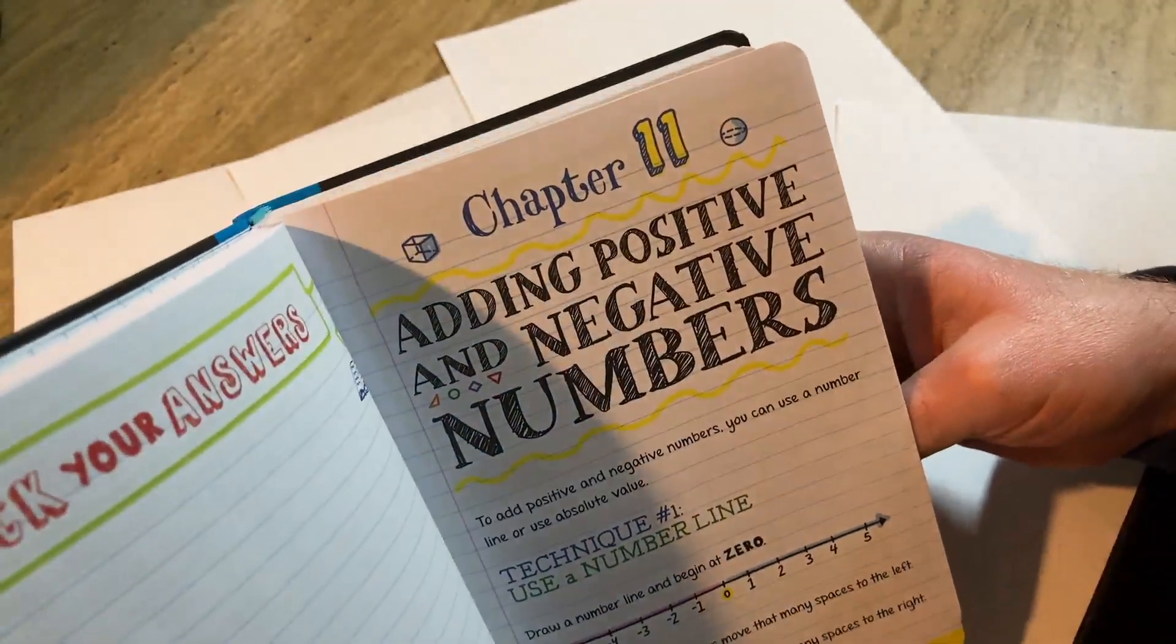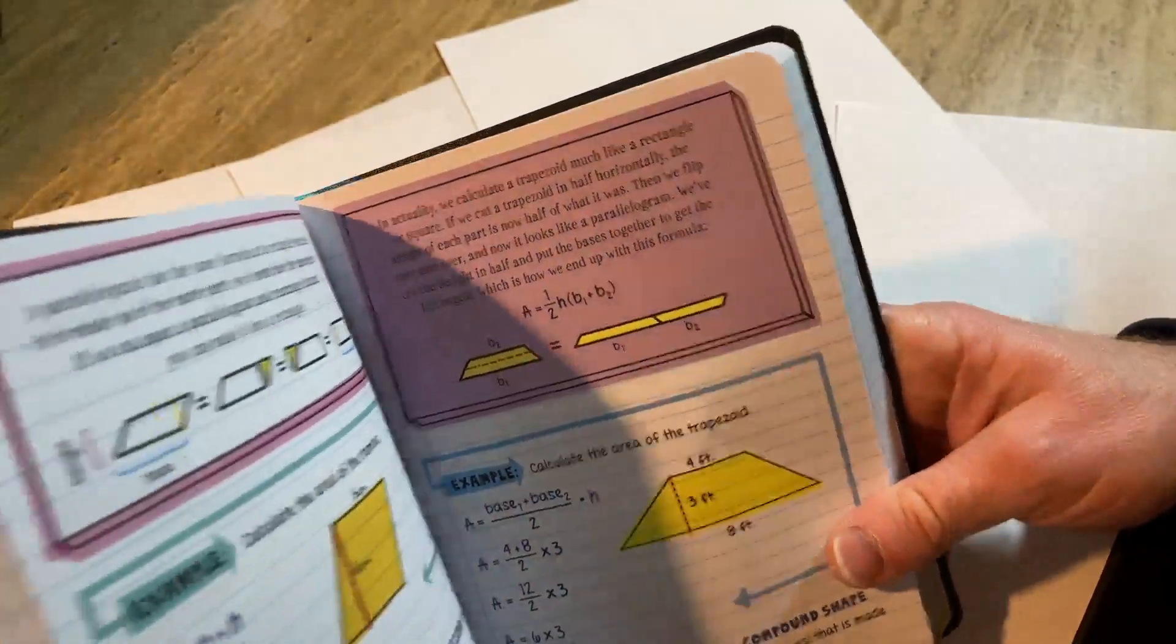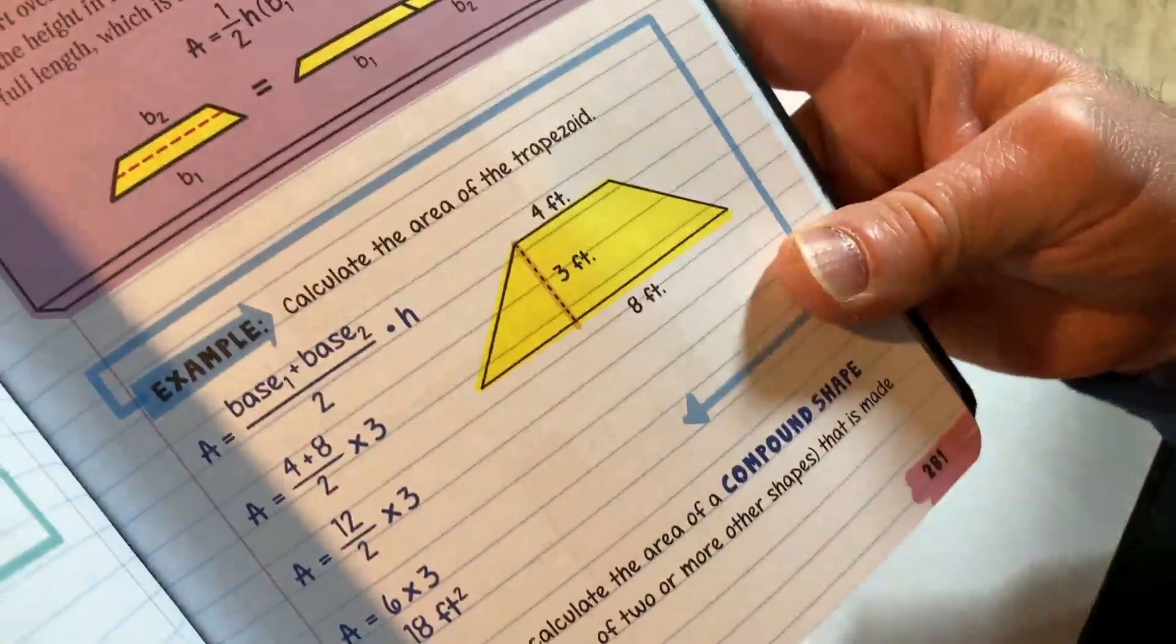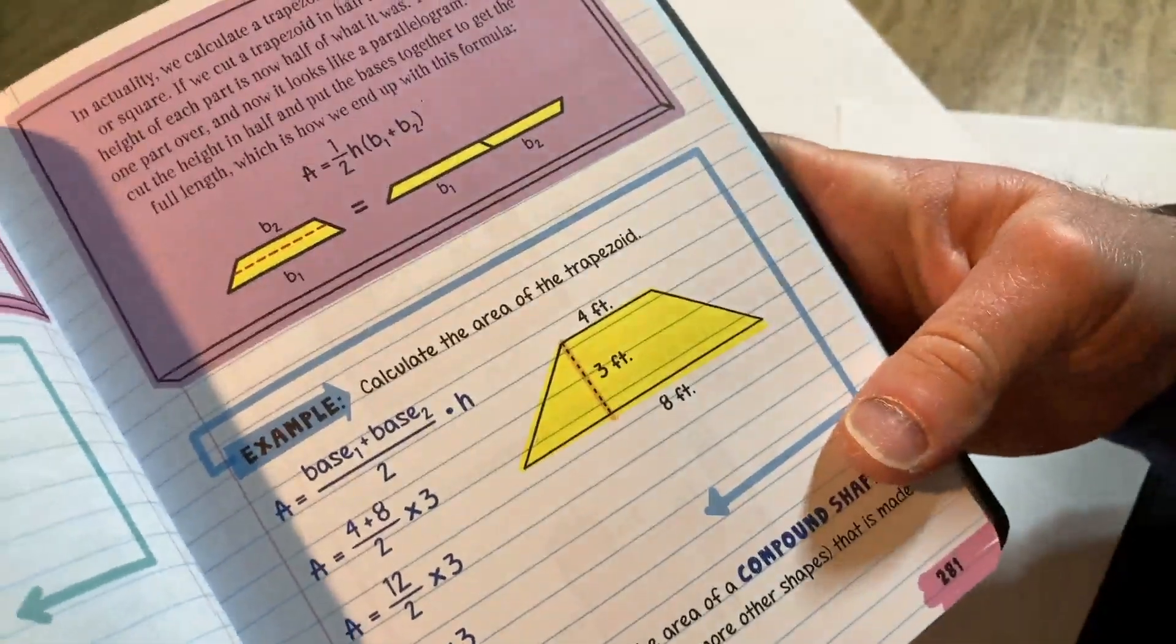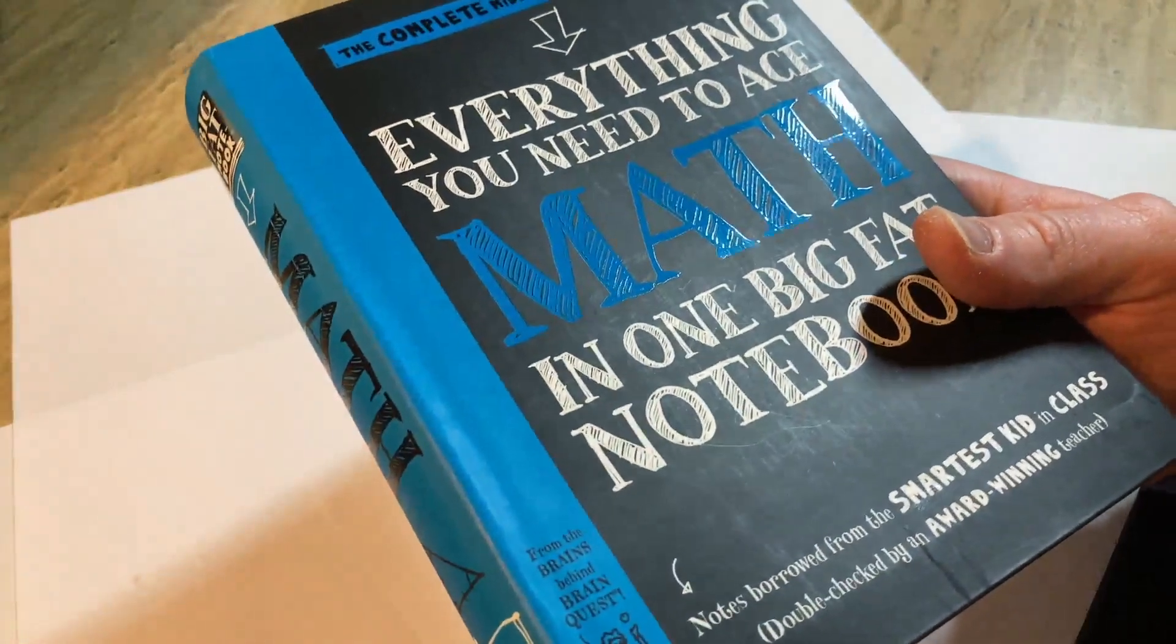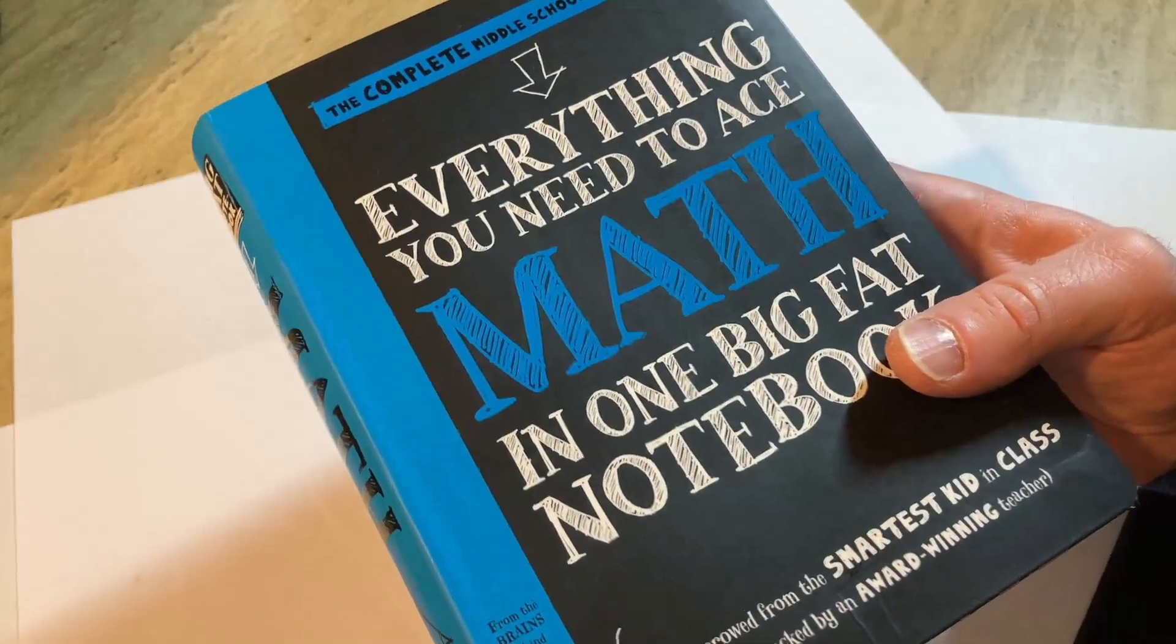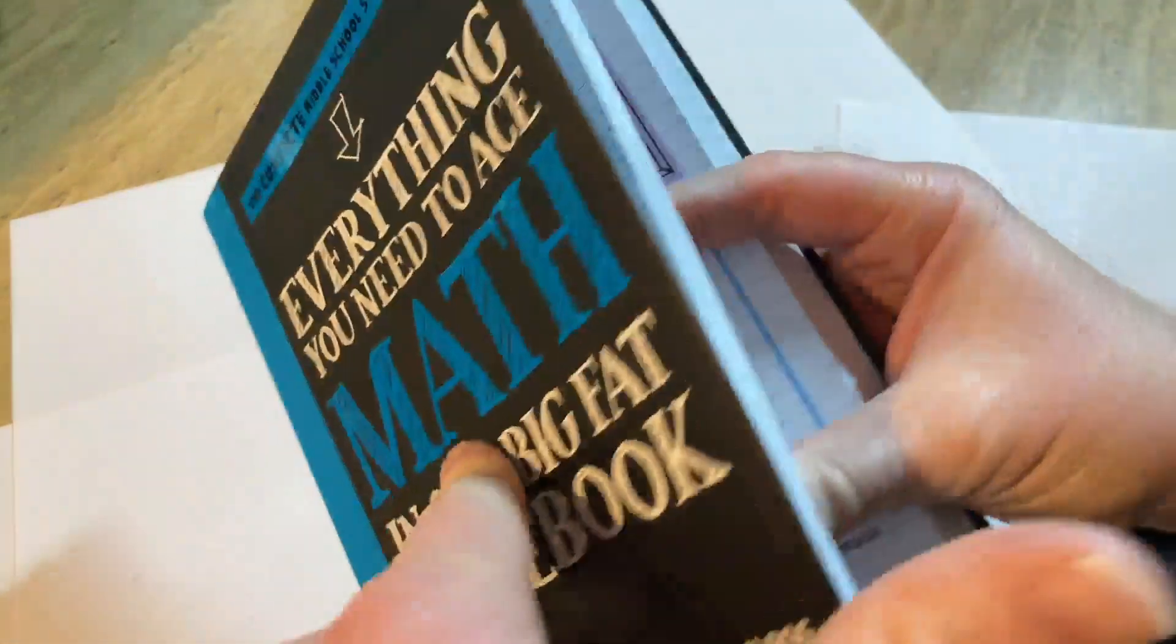And as always, I'll try to remember to leave a link in the description of this video so you can check it out if you want to. It shouldn't be too expensive. That's another thing about these books. All of these books by this company, they're all really inexpensive. If you compare the price of this to the price of a textbook, it's ridiculous. This is so much cheaper than an actual textbook. But it's not the same, not the same.